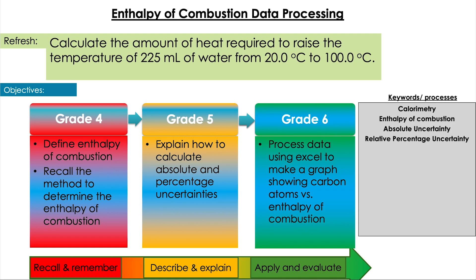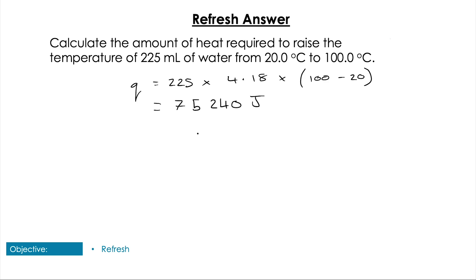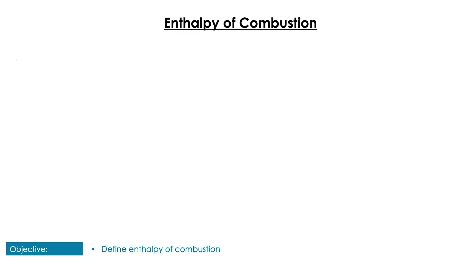Remembering we're using q = mcΔT here, mass — we're going to use 1 gram per centimeter cubed for water — and the specific heat capacity of 4.18, multiplied by T2 minus T1 which is going to be 80. So we get 75,240 joules, or 75.3 kilojoules per mole, and that's taking it to three significant figures.